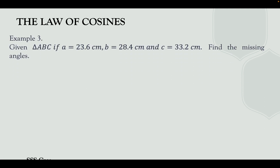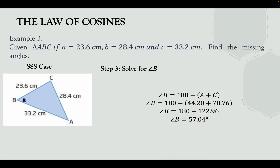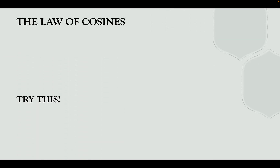Last step: find the third angle. Angle B = 180° − (angle A + angle C) = 180° − (44.20° + 78.76°) = 180° − 122.96° = 57.04°.